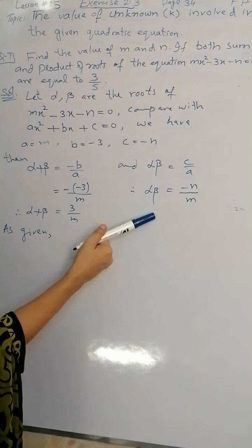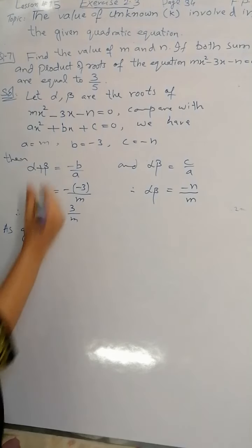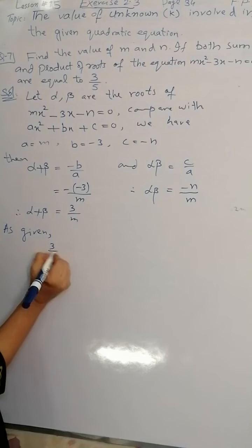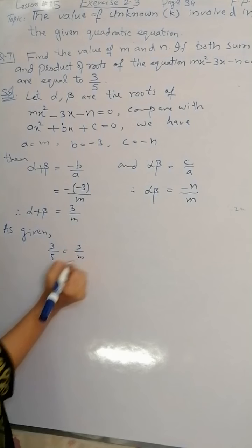Both sum and products are equal to 3/5, so we can write in place of alpha plus beta: 3/5 = 3/m.